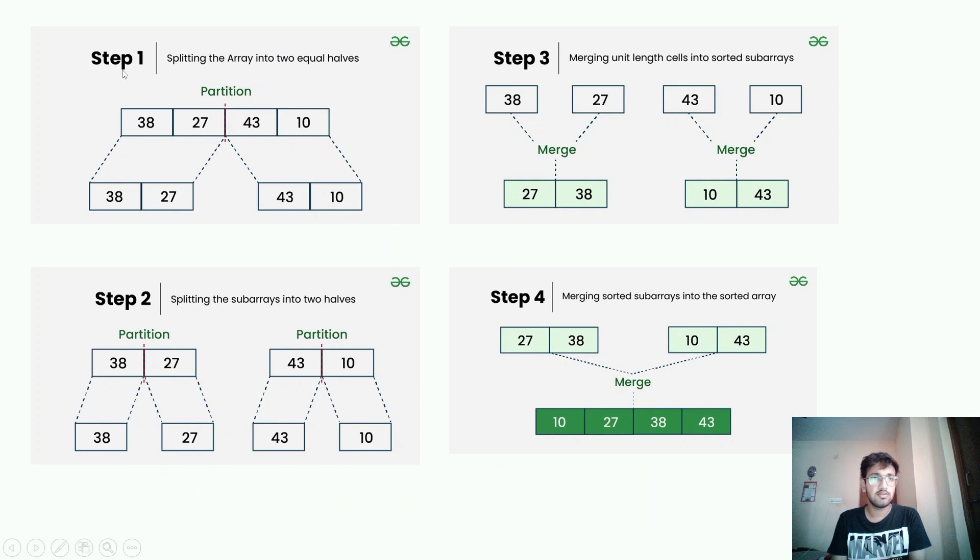Here we take splitting the array into two equal halves. We have a small example with 38, 27, 43 and 10. We split the array exactly by half which we will be using mid equals low plus high by 2 and we are going to split the array into two halves and again the two halves will be split into further smaller halves.